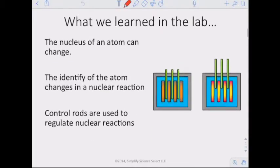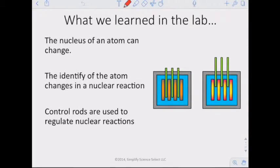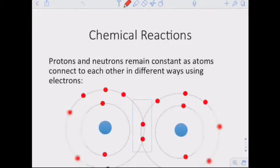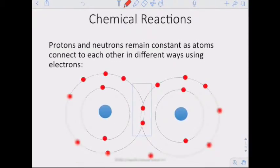What we learned in the lab is that the nucleus of the atom can change. We can change the number of protons and neutrons, and that changes the identity of that atom. The identity of the atom changes in a nuclear reaction. Control rods are used to regulate nuclear reactions. When we're looking at this, the big thing that we need to get from this.